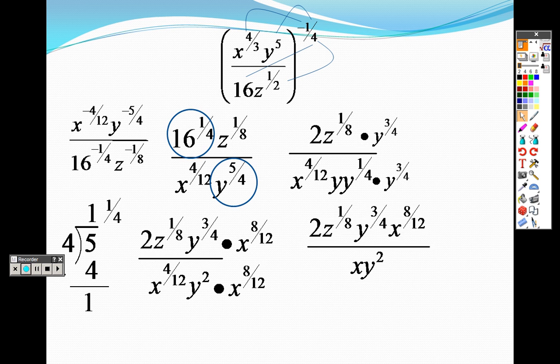So, when I do that, I now have a two z to the one-eighth, y to the three-fourths, and x to the eight-twelfths. I have now a whole x on the bottom and a y squared on the bottom.